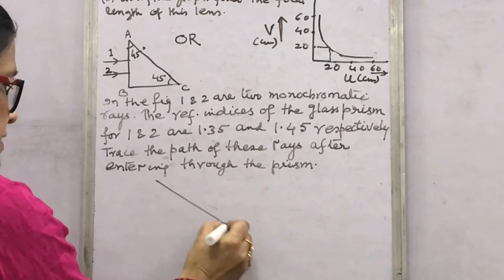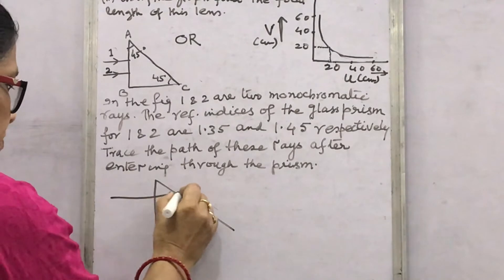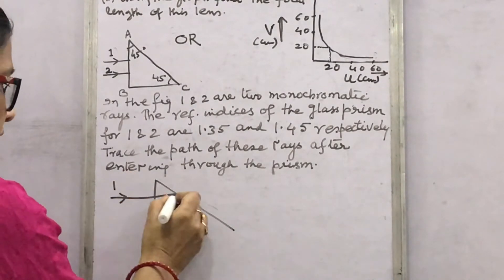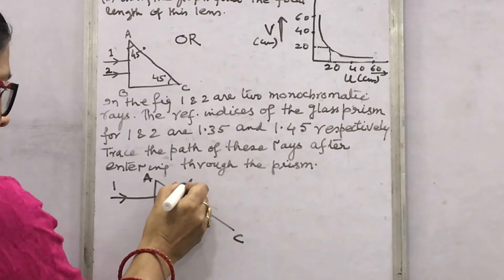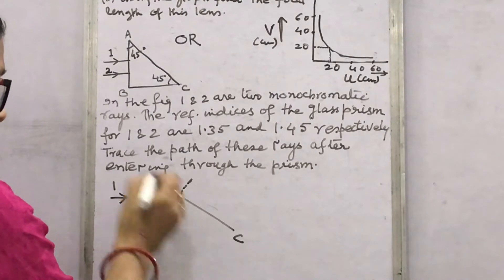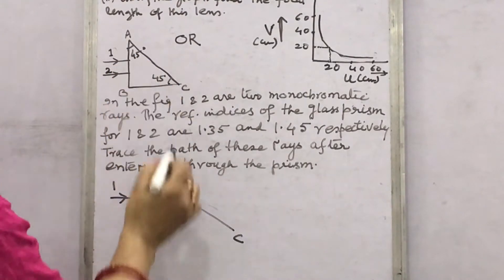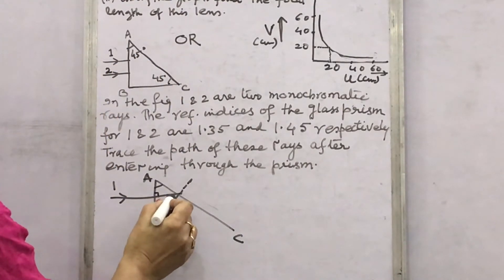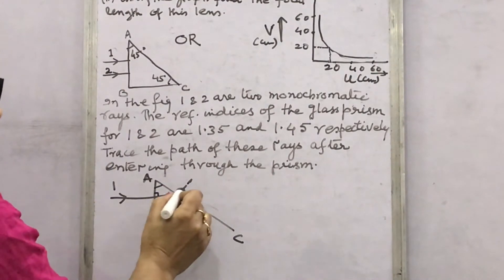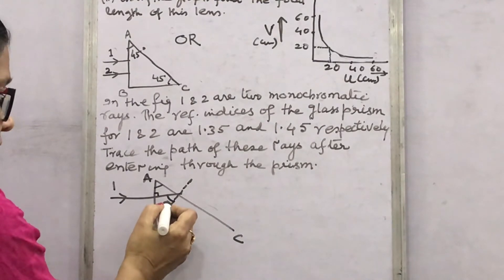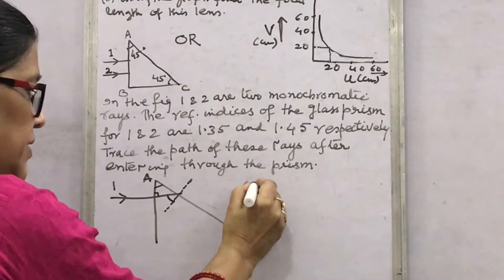At surface AC, the angle of incidence — since this is 45° and these two angles are 45°, making this 90° — the angle of incidence I1 is 45°. You should know the relation for critical angle: mu = 1/sin C. For a glass prism, if sin C = 1/√2, then mu = √2 ≈ 1.41. If the angle of incidence is greater than the critical angle, total internal reflection (TIR) takes place.